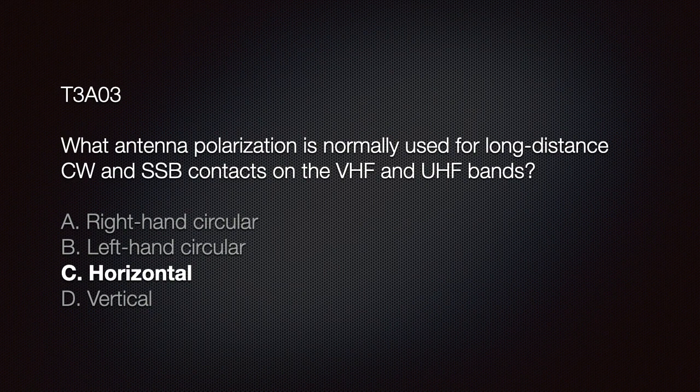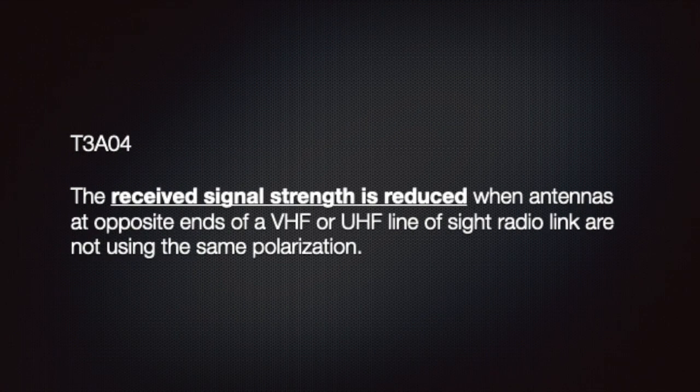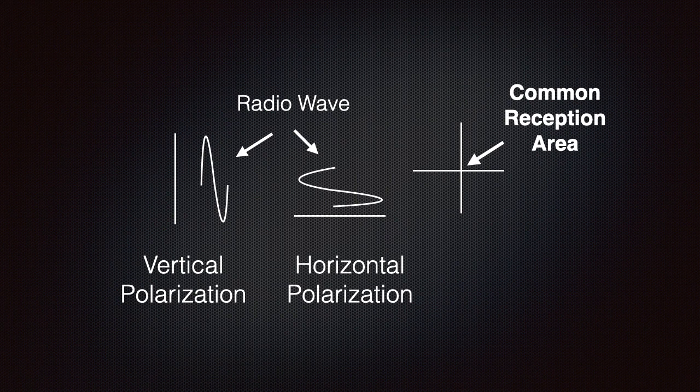We should realize that received signal strength is reduced when antennas at opposite ends of a VHF or UHF line-of-sight radio link are not used in the same polarization. This slide illustrates how radio waves with vertical polarization are perpendicular to those with horizontal polarization.